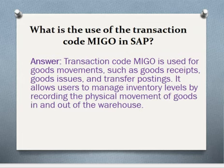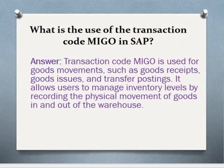What is the use of transaction code MIGO in SAP? Transaction code MIGO is used for goods movement such as goods receipts, goods issues and transfer postings. It allows users to manage inventory levels by recording the physical movement of goods in and out of the warehouse.